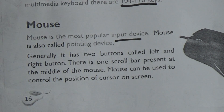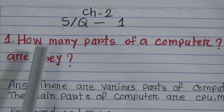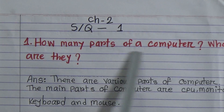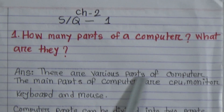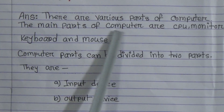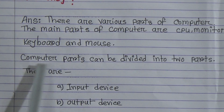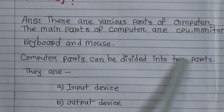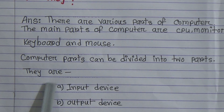Dear learners, the rest of the parts we will cover in another class. Now here is question number one from chapter two: How many parts does a computer have and what are they? There are various parts of a computer. The main parts are CPU, monitor, keyboard, and mouse. Computer parts can be divided into two parts: input device and output device.